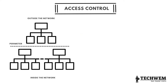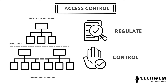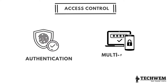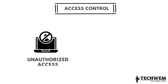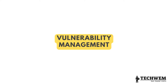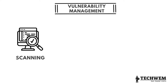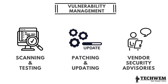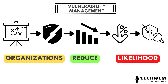Number 3: Access Control — the implementation of mechanisms and policies to regulate and control user access to the OT system. This involves assigning appropriate user roles and permissions, implementing strong authentication mechanisms such as multi-factor authentication, and regularly reviewing and revoking access rights when necessary. Access control helps prevent unauthorized access and limits the potential for insider threats. Number 4: Vulnerability Management — identifying, assessing and remediating vulnerabilities in the OT system. This includes regular scanning and testing for vulnerabilities, patching and updating systems and software, and monitoring vendor security advisories. By proactively addressing vulnerabilities, organizations can reduce the likelihood of successful attacks targeting known weaknesses.